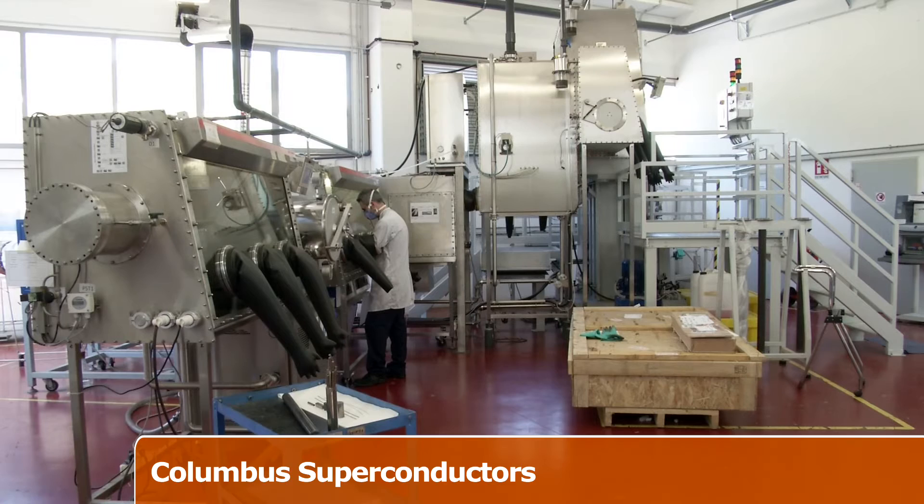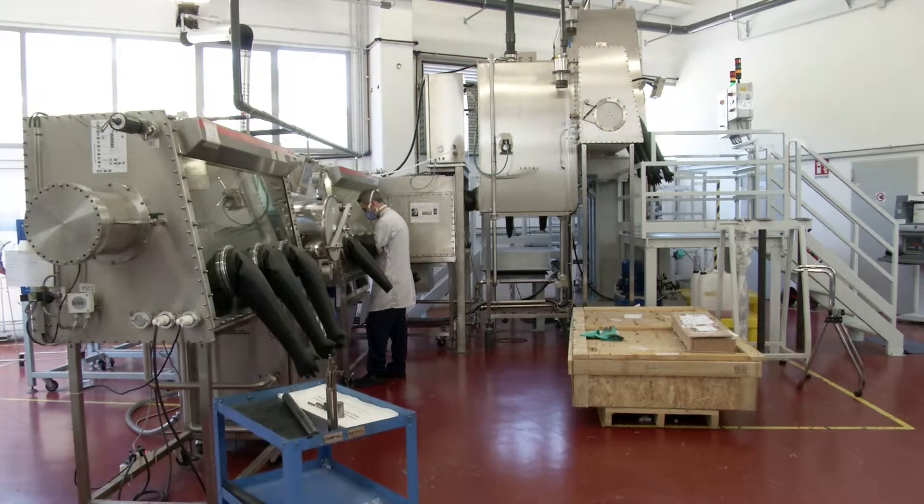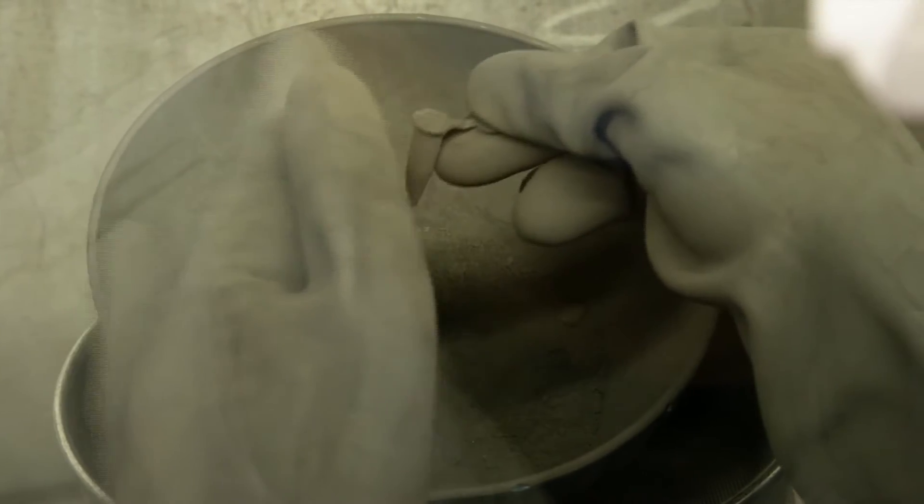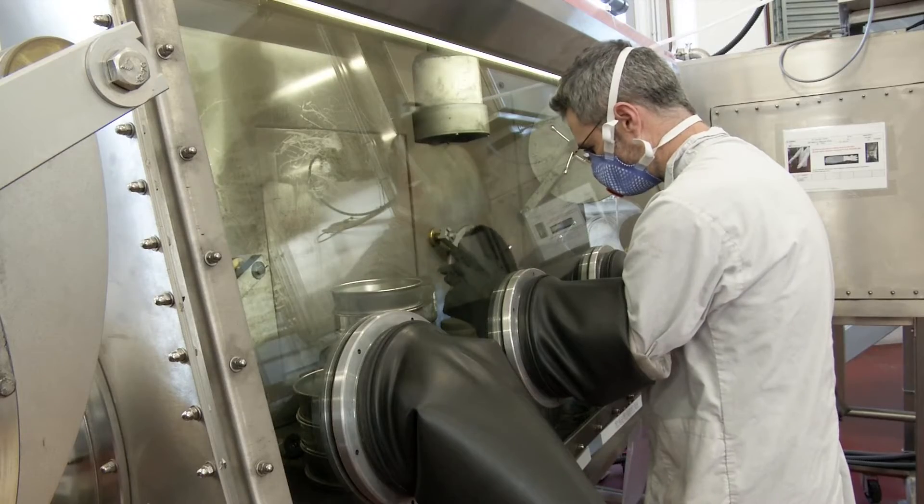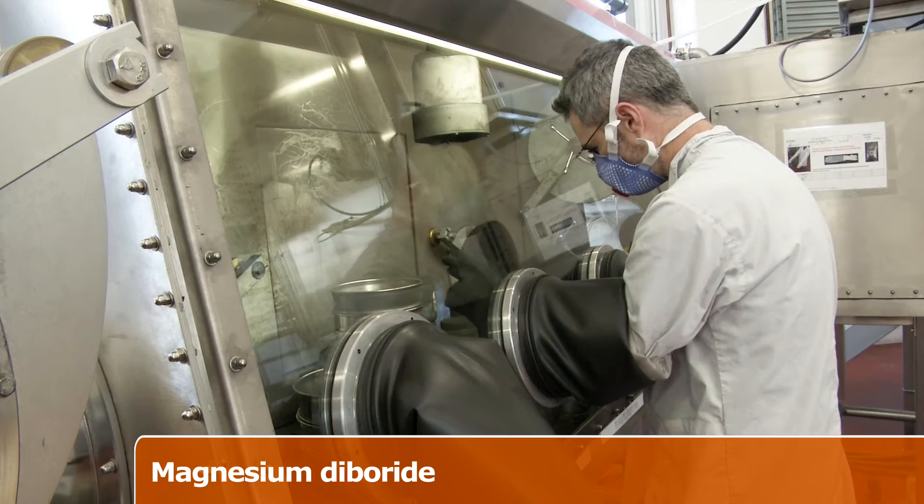At Columbus Superconductors, Genoa, Italy, everything starts with this powder. Two chemical elements, magnesium and boron, are combined to obtain a superconducting compound called magnesium diboride.